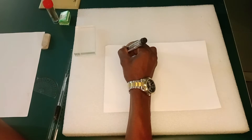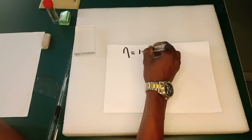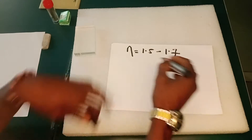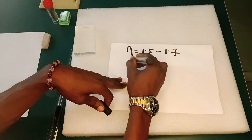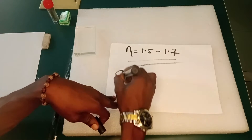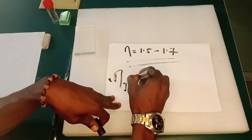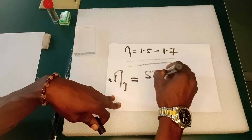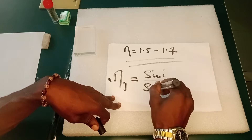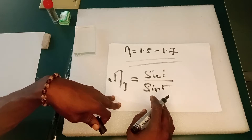The refractive index of glass ranges from 1.5 to 1.7. This is what we want to verify in this experiment, using the equation: refractive index from air to glass equals sine of I divided by sine of R, where I is the angle of incidence and R is the angle of refraction.